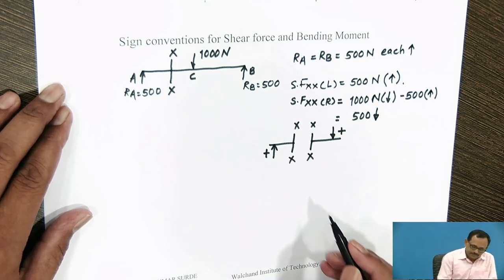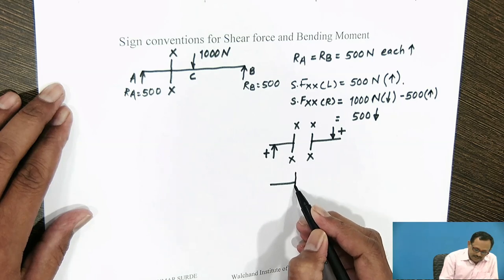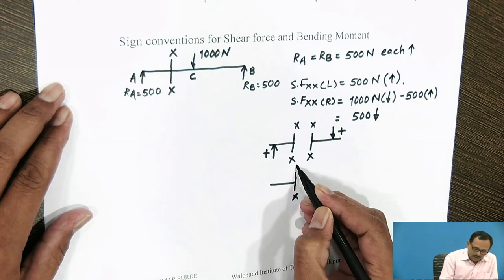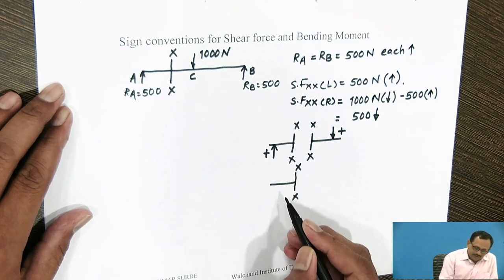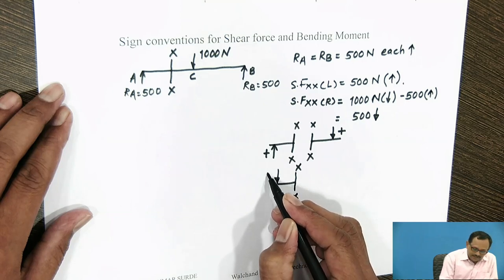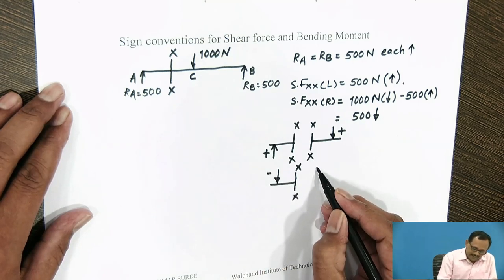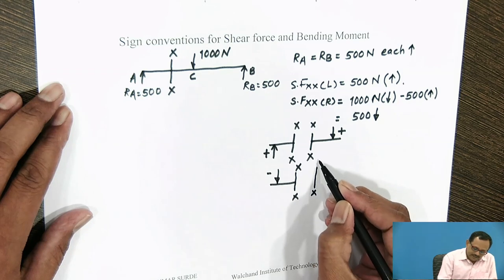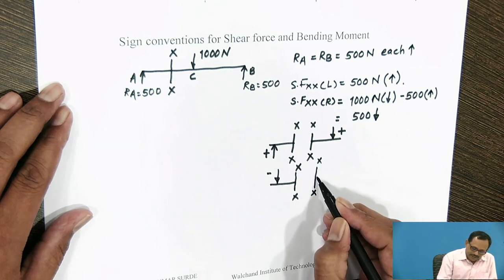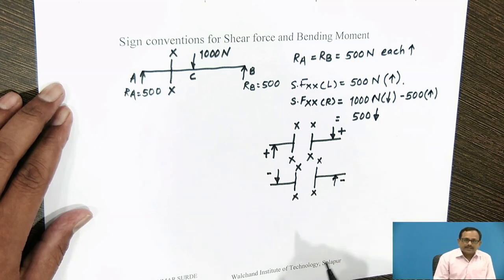Whereas, the resultant of the forces and reactions acting to the left side of the section in the downward direction are considered to be negative. If you are referring to the right side of the section, then all upward forces are considered to be negative.